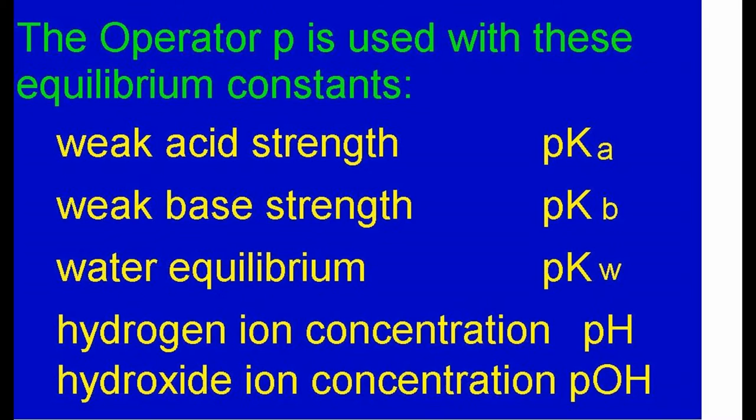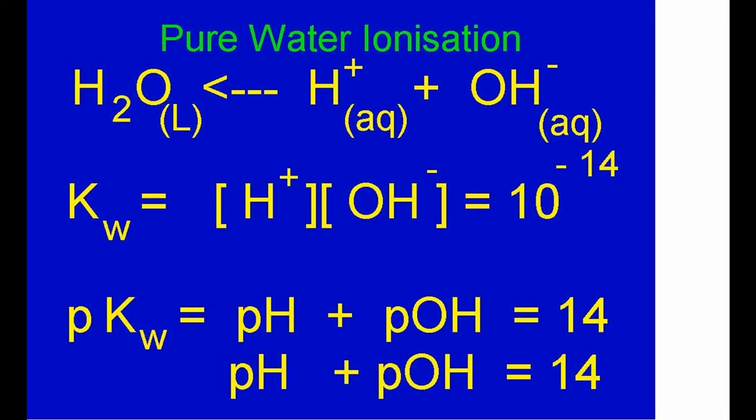The operator P is used with acid ionization constants Ka and base ionization constants Kb. These measure whether acids and bases are weak or not. The operator P is also used when measuring the strengths of hydrogen ions and hydroxide ions in water. We will focus on the water equilibrium Kw.